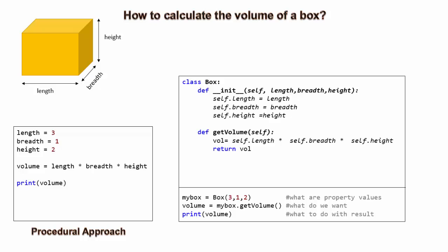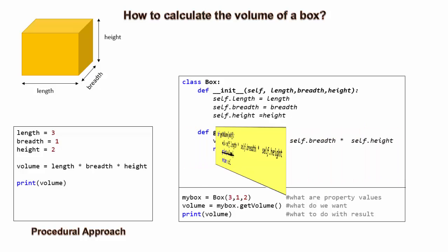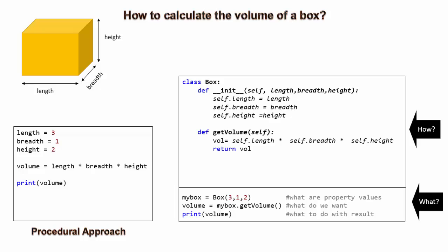All the learners, please pay attention here. The get volume method should not print the volume since that is not its responsibility. What to do with the result is responsibility of the caller. The caller may want to use this value for some other purpose instead of printing. Thus, we can see that what and how part of procedure are clearly separated. This is object-oriented approach.